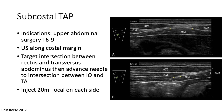The subcostal TAP block is used for incisions of the upper abdomen — for example, an ex-lap or laparoscopic ports like in a lap chole. The ultrasound probe is placed along the costal margin parallel to the lower edge of the ribs. The ultrasound is moved until the rectus abdominis muscle is seen overlying the transversus abdominis muscle. The needle is inserted medial to lateral, targeting the intersection between the rectus and the transversus, and saline can be used to advance the needle as the muscle planes open up.